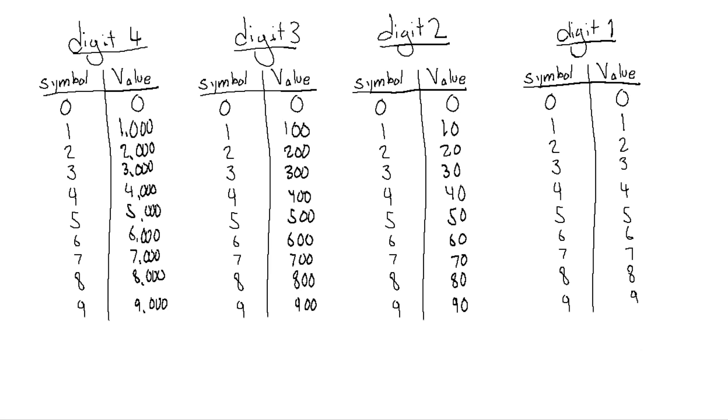This entire thing is a number, 3191. Each individual slot is called a digit, and in each digit we write symbols which represent values. The thing is that symbols can stay the same, but their value will change depending on the digit they are in. For example, the symbol 1 in the first digit represents the value 1, but the exact same symbol 1 in the third digit represents the value 100. Here is a chart showing all possible combinations of symbols and values for the first four digits of the base 10 number system.